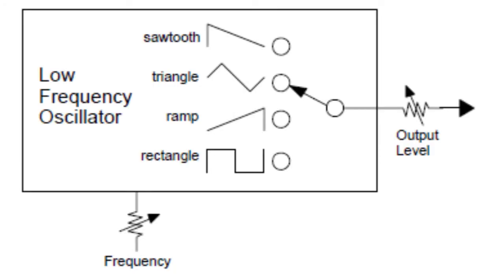And finally we move to our LFO, the Low Frequency Oscillator. We cannot hear the work of the LFO itself, but what we can hear is its impact on a synth parameter, which could be anything. For example, it could be volume to create a tremolo effect, or we can control the pitch with an LFO for the vibrato effect.